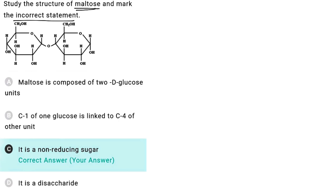In this question we have to find the incorrect statement regarding maltose. Maltose is a disaccharide of alpha-D-glucose.